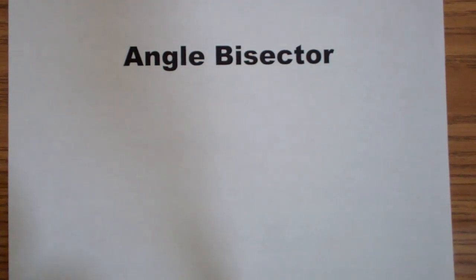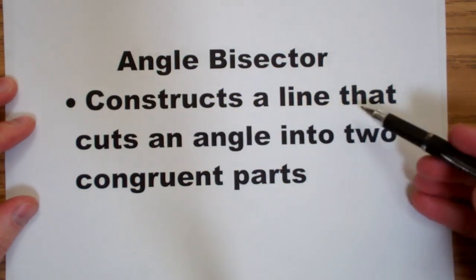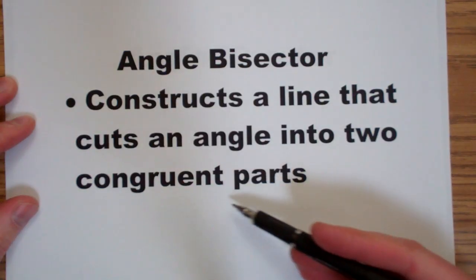This is the angle bisector construction. An angle bisector constructs a line that cuts an angle into two congruent parts.